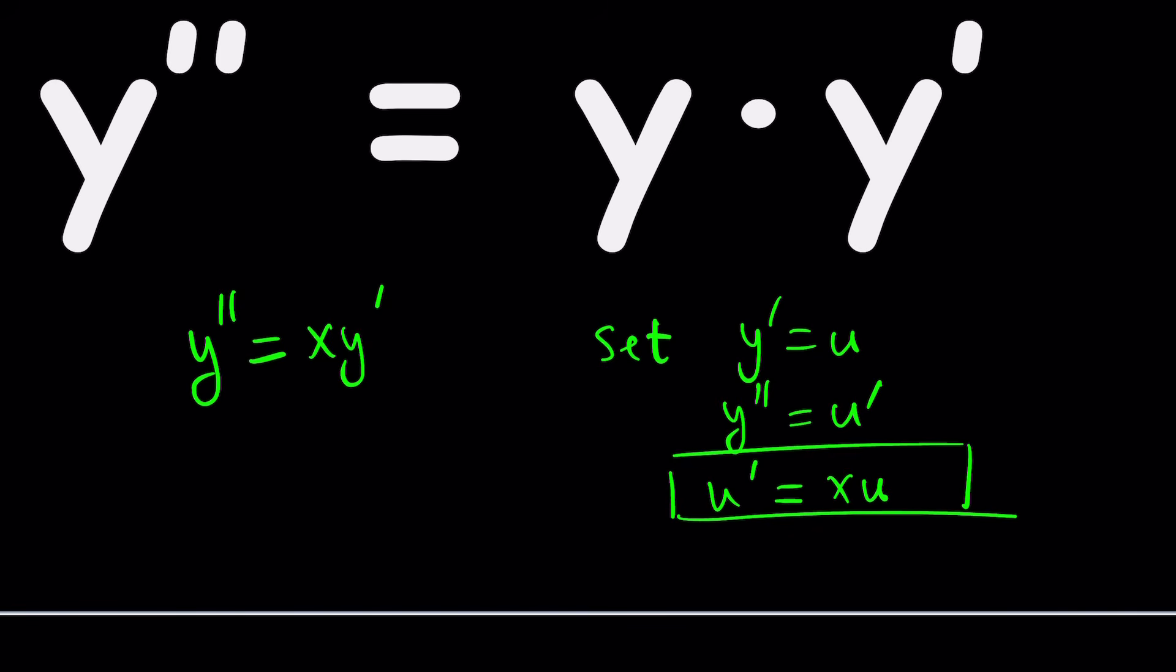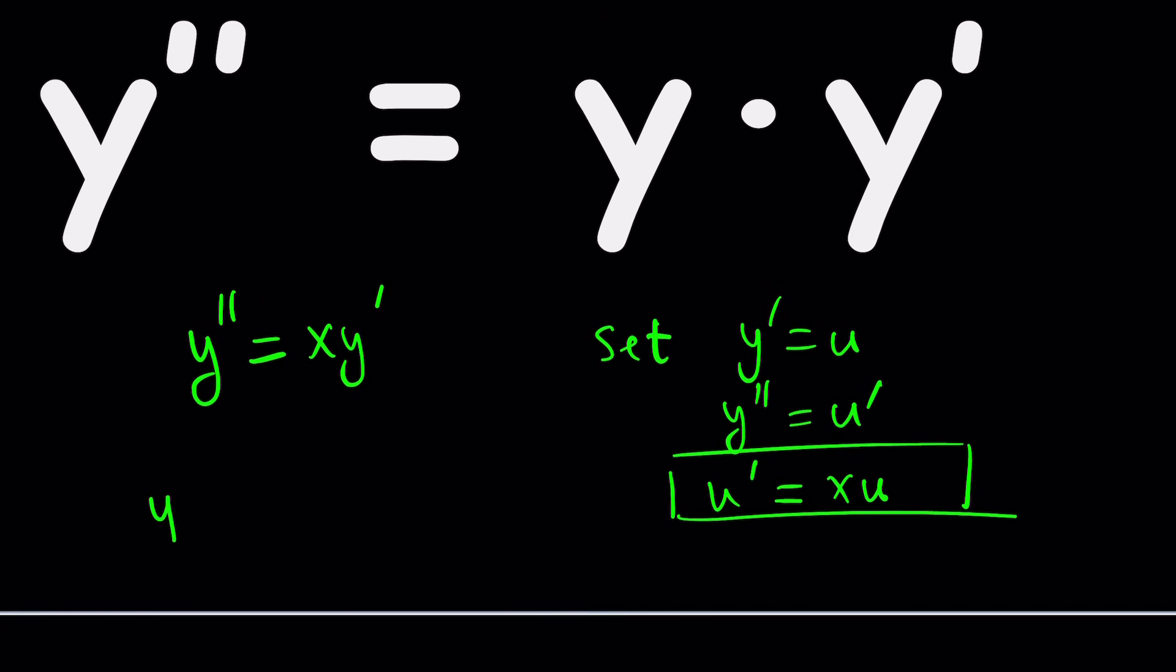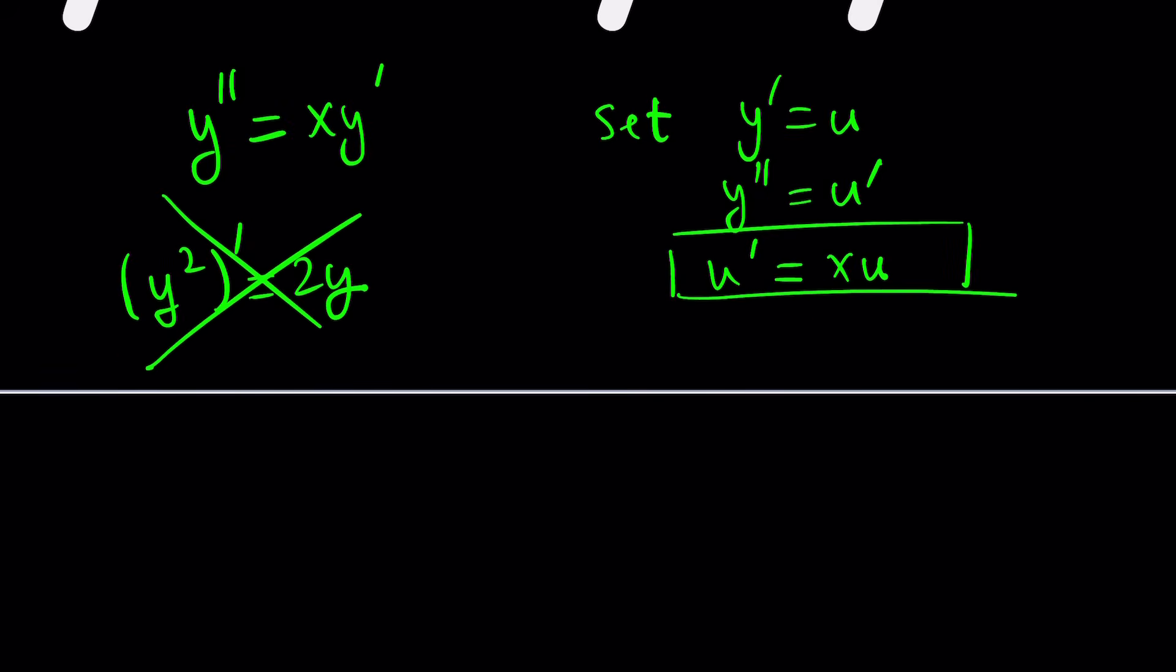Now think about y is the derivative of what? If you don't know think about 2y. You got it? So for example differentiate y squared and you get 2y right? Really? No you don't. Something is missing. What is that? Yes it's the good old chain rule.